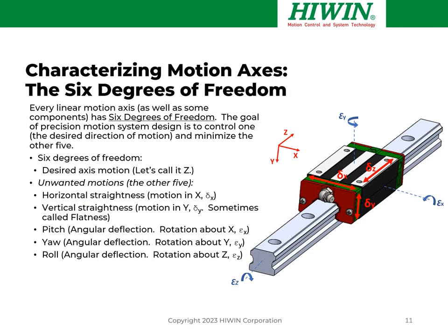When looking at motion axes, one of the most important concepts to understand first is the six degrees of freedom of every axis. Every linear motion axis — as well as components like a linear guideway — has six degrees of freedom. Fundamentally, the goal of precision motion system design is to control one, which is the desired direction of motion, and minimize the other five. You can't make the other five zero, but you can minimize them. As you build a motion system from its components, the error sources contributed by each component add together. The six degrees of freedom are: the desired direction of motion (call it Z), horizontal and vertical straightness, and three angular errors — pitch, yaw, and roll.